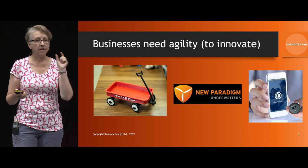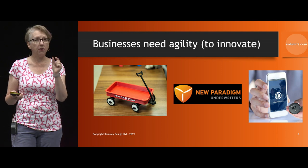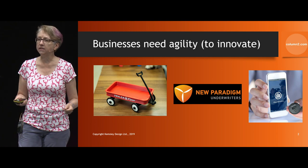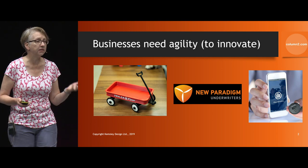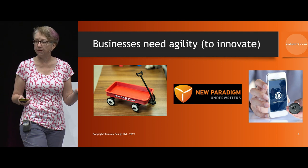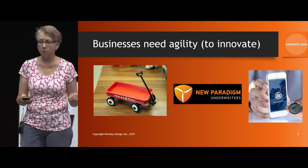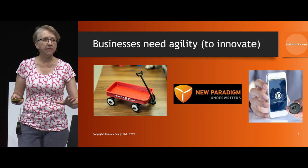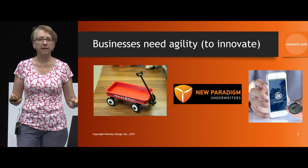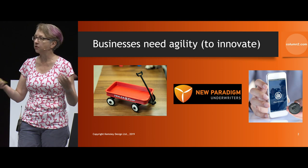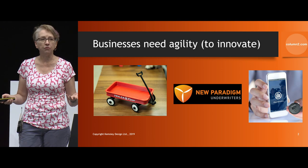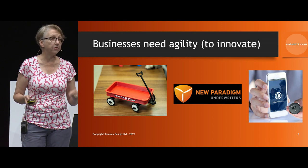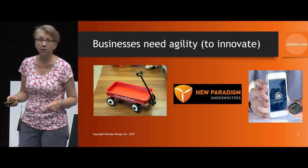We now have usage-based pricing and the idea that there's no common model anymore for how a lot of these services are offered. Insurance is definitely one of those. This agility is what allows companies to change things behind the scenes, create the processes and services needed to offer these new capabilities, and to do it before their competitors do — because that will happen.